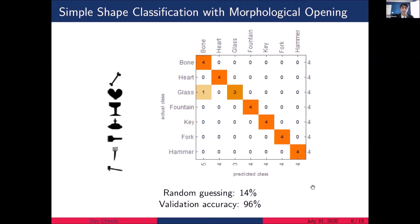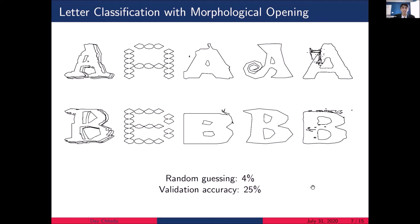This success motivates us to consider trying using the morphological opening on a more advanced data set. So the next data set we look at is a fonts data set containing a number of fonts, each containing 26 shapes, one for each letter of the English alphabet. The first thing you'll notice is that each of these fonts are highly stylized. So that means that even for the same letter, the shapes look really different in different fonts. And that's going to impact the accuracy of our classifier.